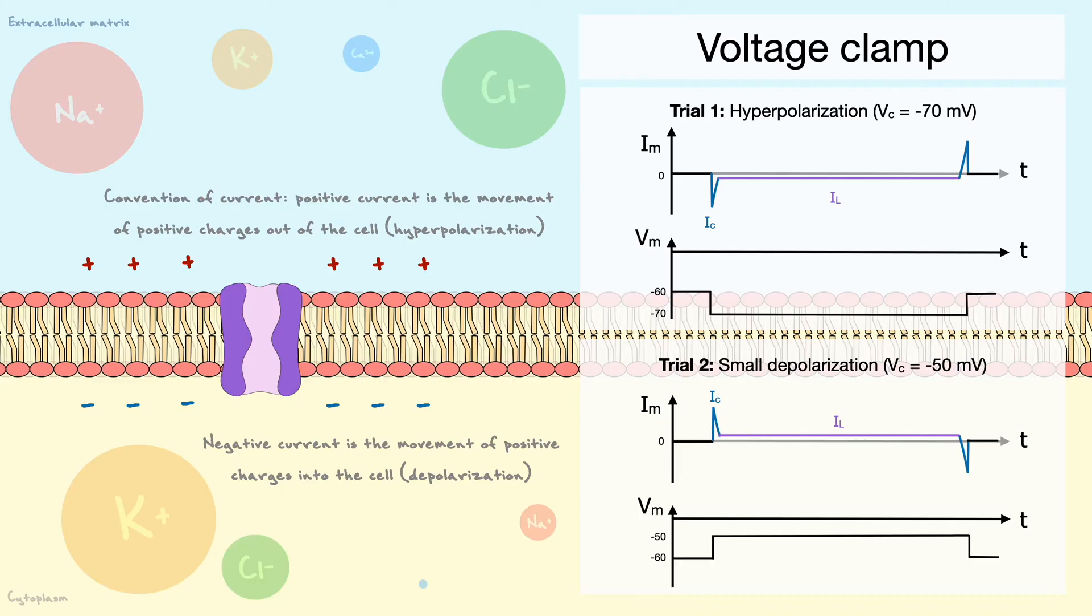In voltage clamp recordings, positive currents are often referred to as outward currents and negative currents as inward currents. Consequently, in the first example, we say that the leak channels have an inward current, while in the second example, the channels have an outward current.